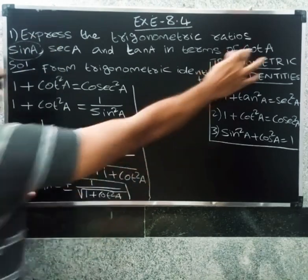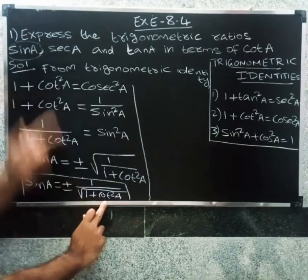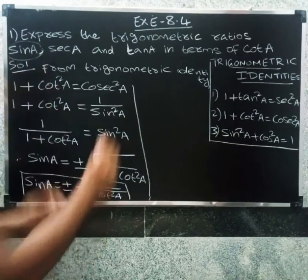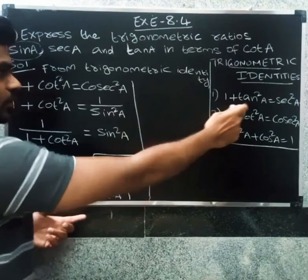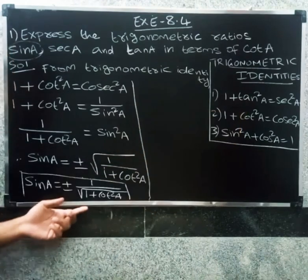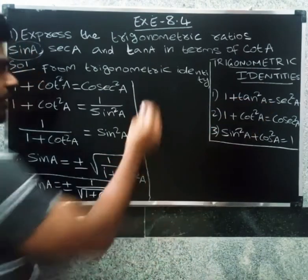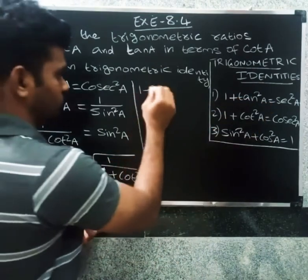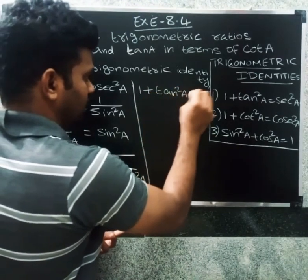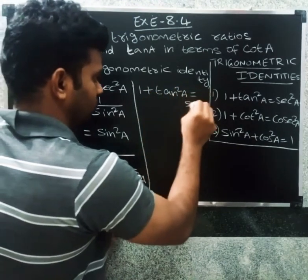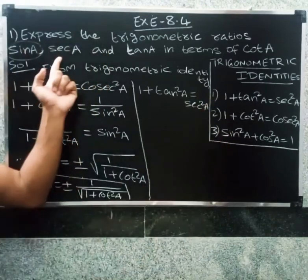Next, for sec a in terms of cot a, we use another formula: one plus tan square a equal to secant square a. So one plus tan square a equal to secant square a.